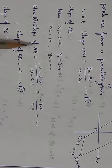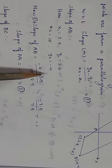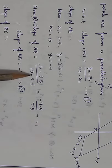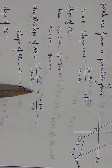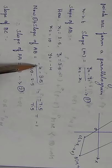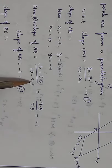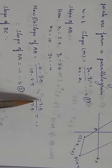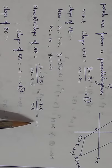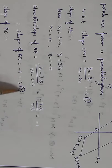Equation 1 implies slope of AB is equal to (y2 minus y1) divided by (x2 minus x1). y2 is minus 4, minus y1 is 3.5, divided by x2 is 10 minus x1 is 2.5. So, minus 4 minus 3.5 gives minus 7.5, divided by 10 minus 2.5 gives 7.5. Therefore slope of AB equals minus 1. This is equation 2.